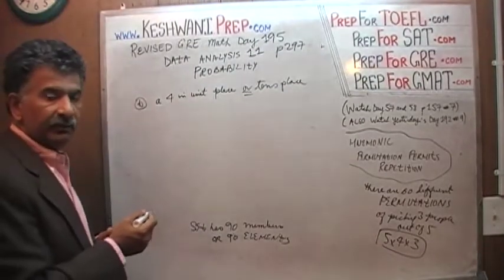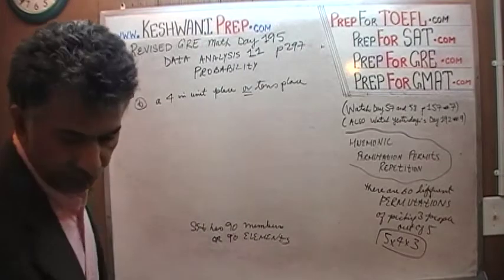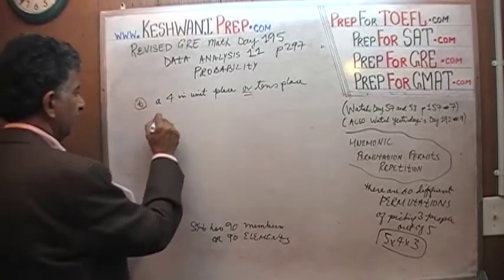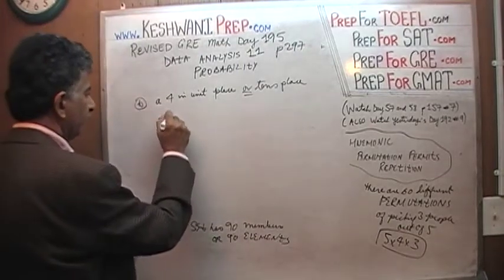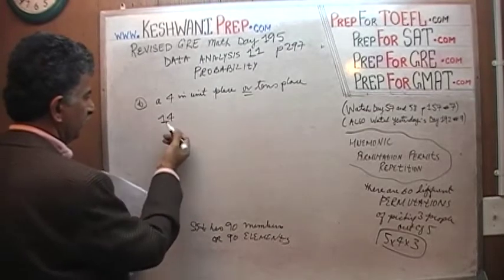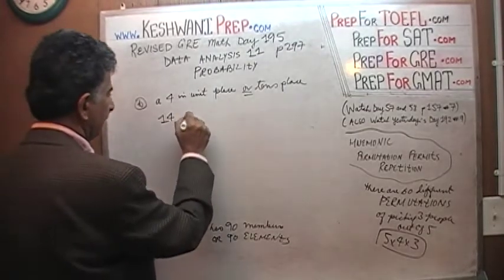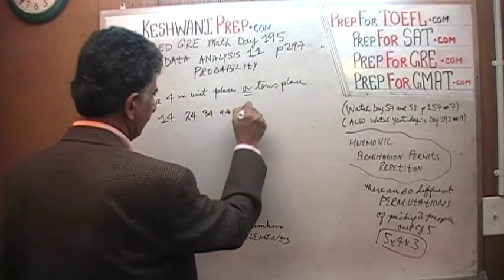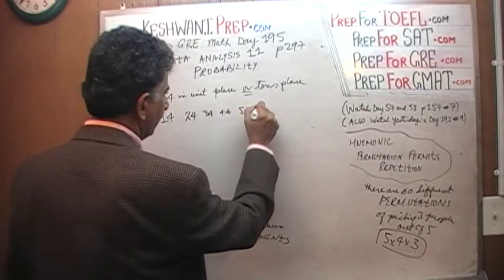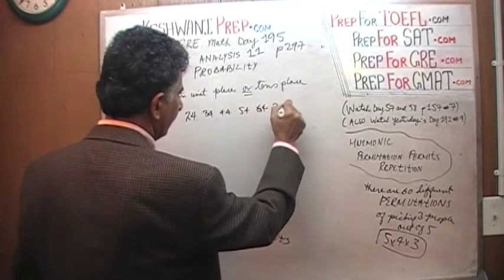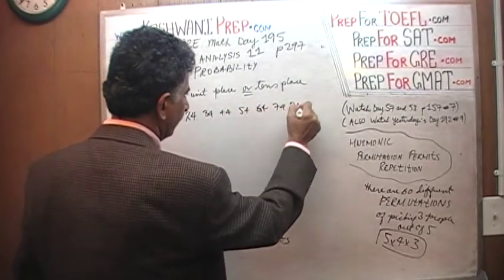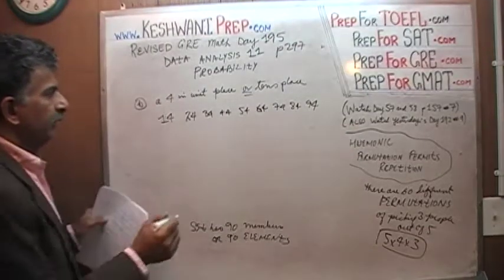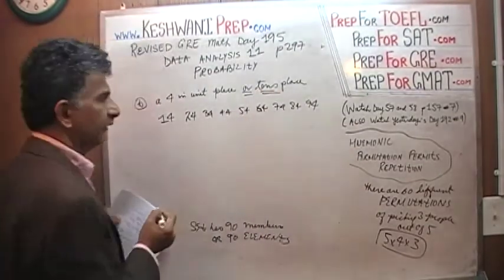So, four in the unit place — how many integers are there with four in the unit place? Let's enumerate all of them. It has to be a two-digit integer: fourteen, twenty-four, thirty-four, forty-four, fifty-four, sixty-four, seventy-four, eighty-four, and ninety-four.